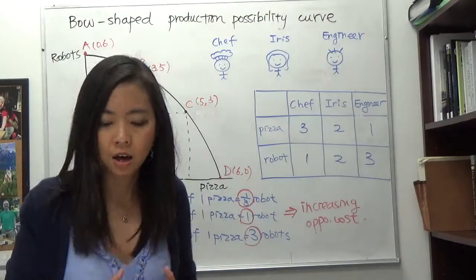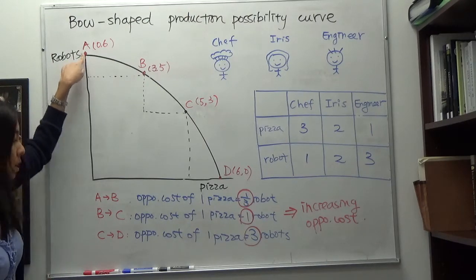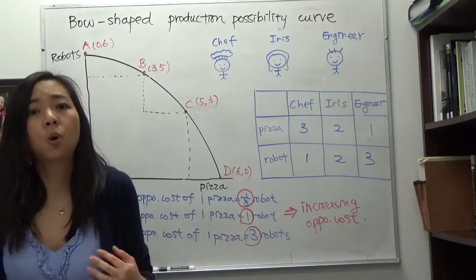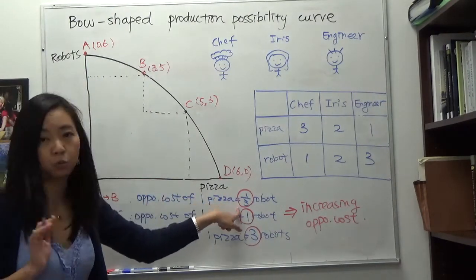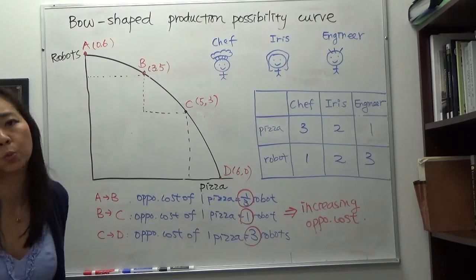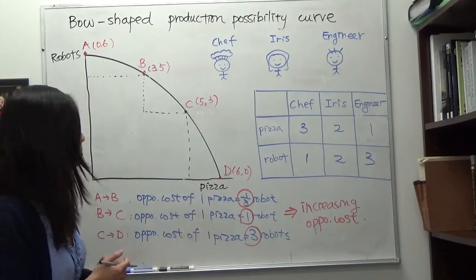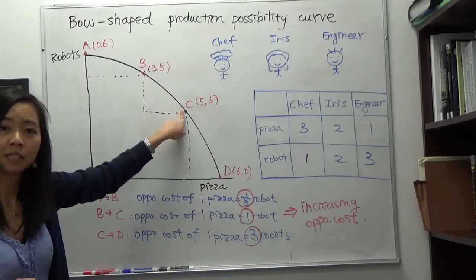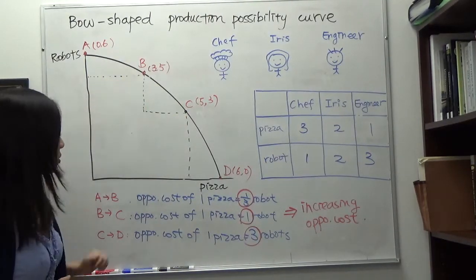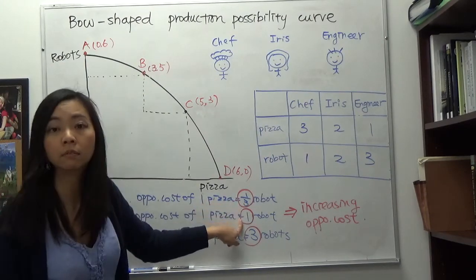You can see the opportunity cost of one pizza is increasing. From point A to point B, sending the chef gave us three more pizzas at the cost of one robot, so the opportunity cost of one pizza is one-third of a robot — small, because the chef is great at making pizza and not good at making robots. From point B to point C, we gained two pizzas at the cost of two robots, so the opportunity cost of one pizza is one robot. The opportunity cost has increased from one-third to one.